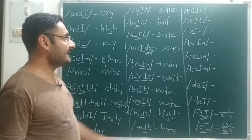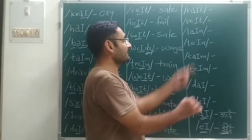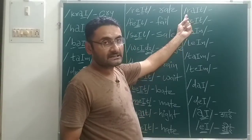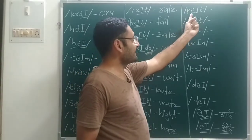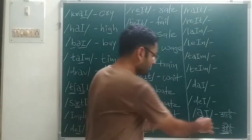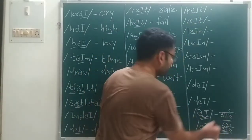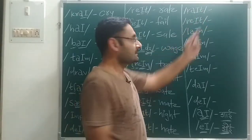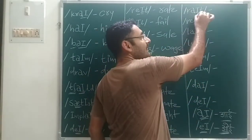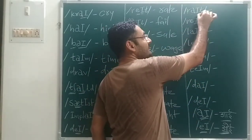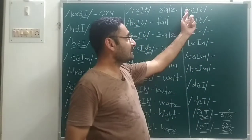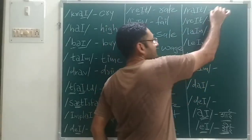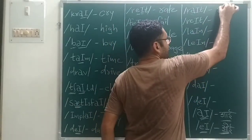We will move with the next: R sound, then I sound — R, I, T — working through: R, I, T — that gives us 'write'. So I will write: write.